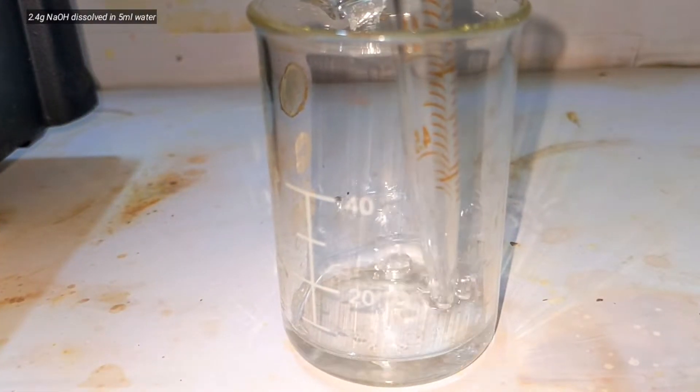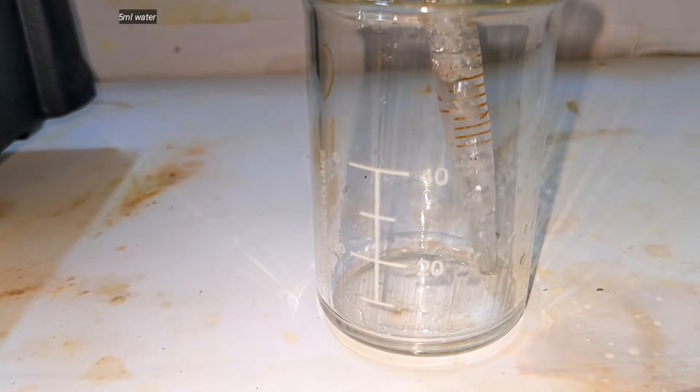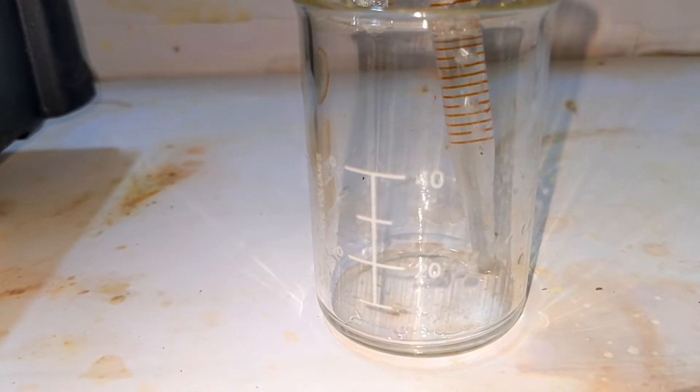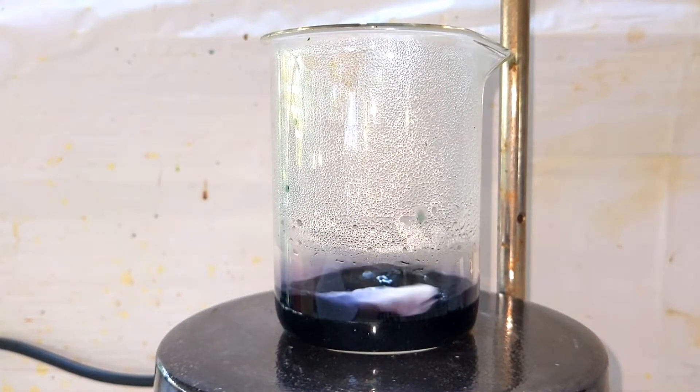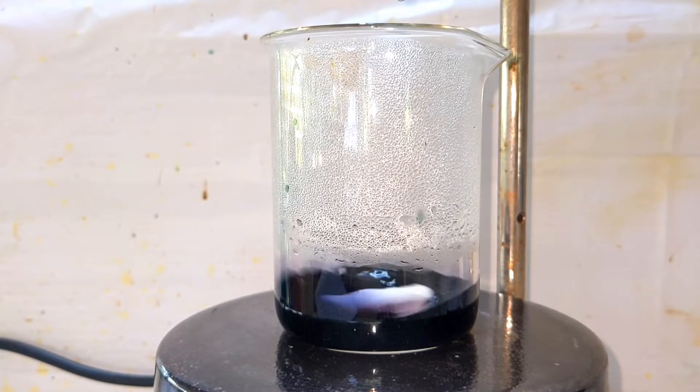Now we take the sodium hydroxide solution, which we had made by dissolving 2.4 grams of sodium hydroxide in about 5 milliliters of water, in a pipette. The mixture in the beaker was then heated up with stirring and the sodium hydroxide solution was added into it.